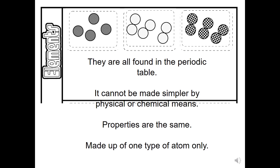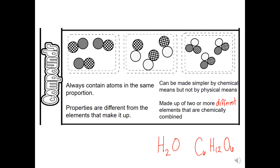Elements are found on the periodic table. You cannot make them simpler because an atom is as simple as it gets. The properties are the same — with your piece of aluminum and my piece of aluminum, if I tried to melt them they would both have the same melting point, and they would react with other substances the same way. They are made up of only one type of atom.